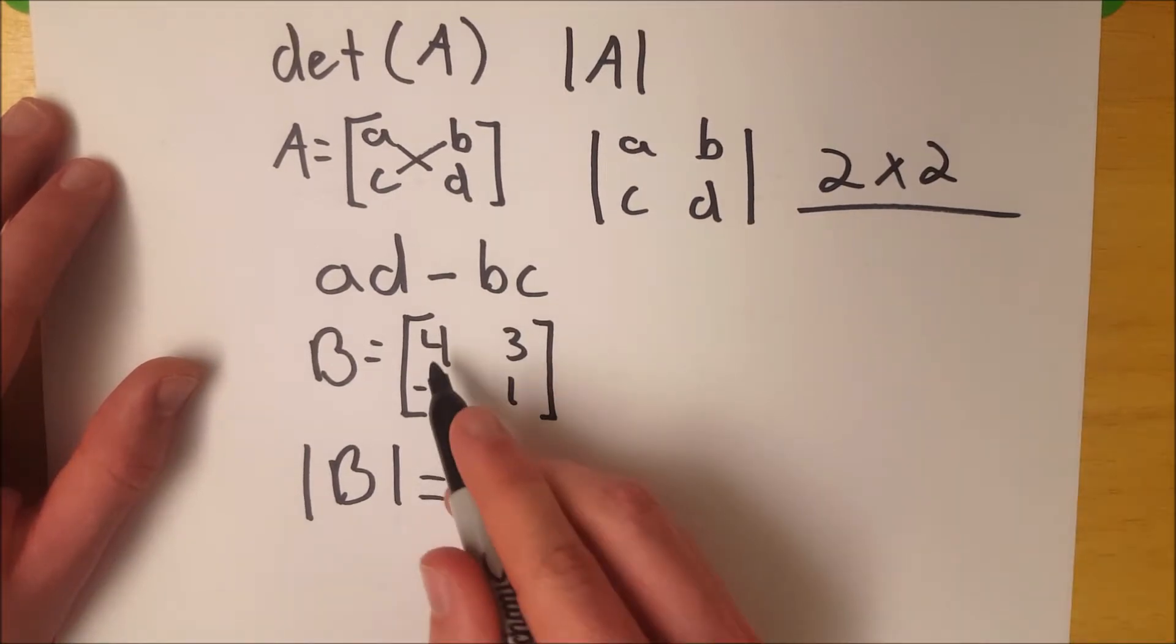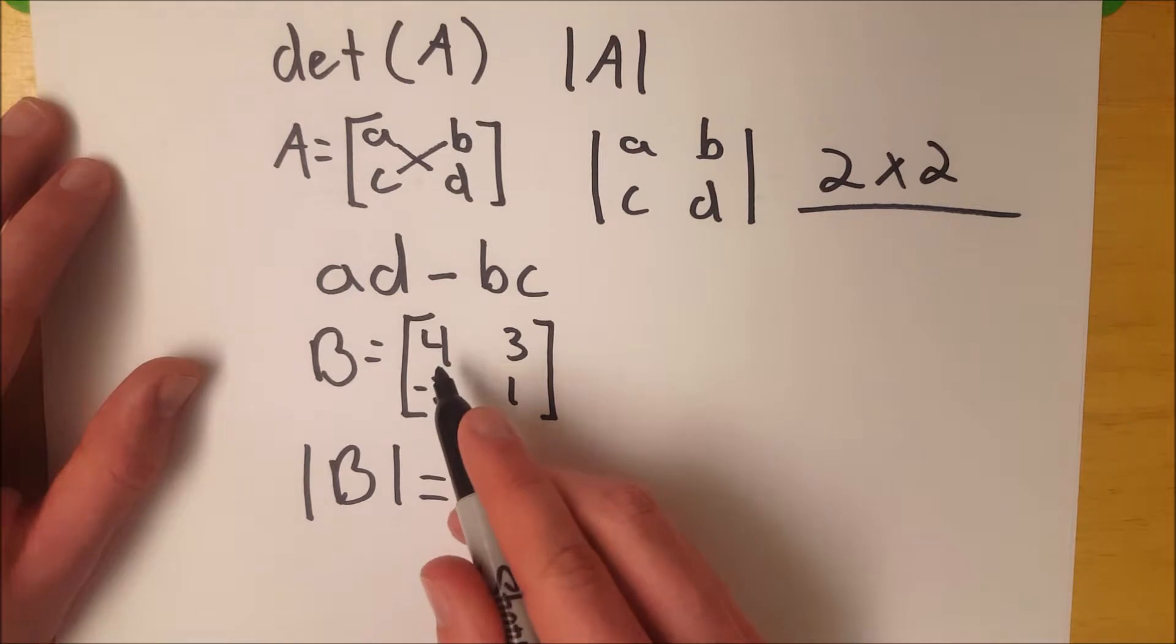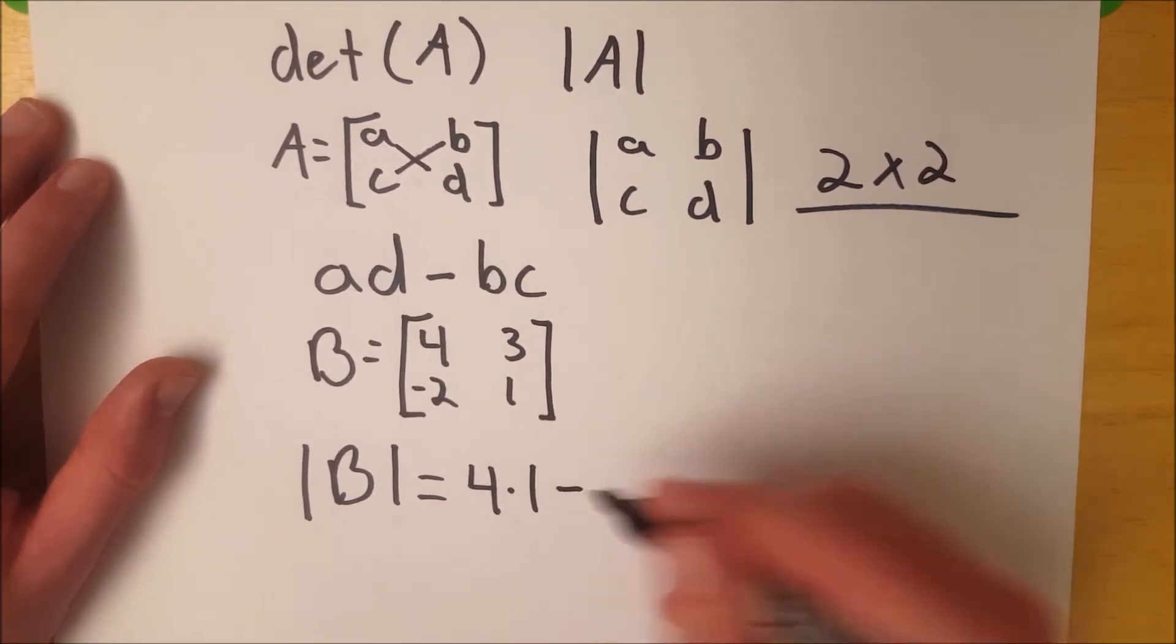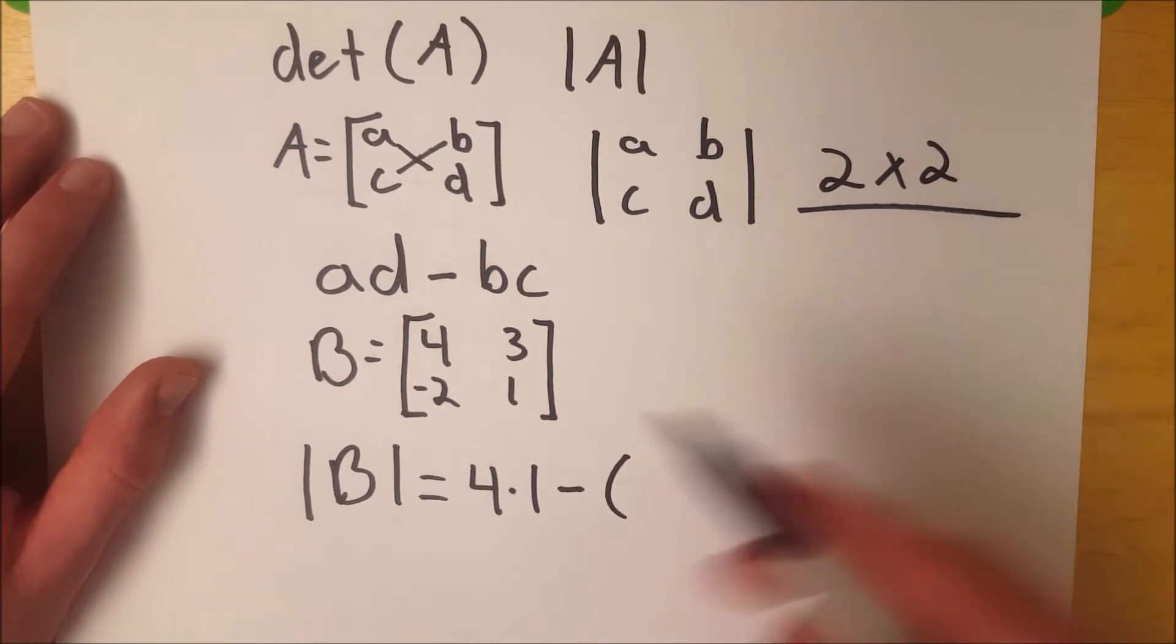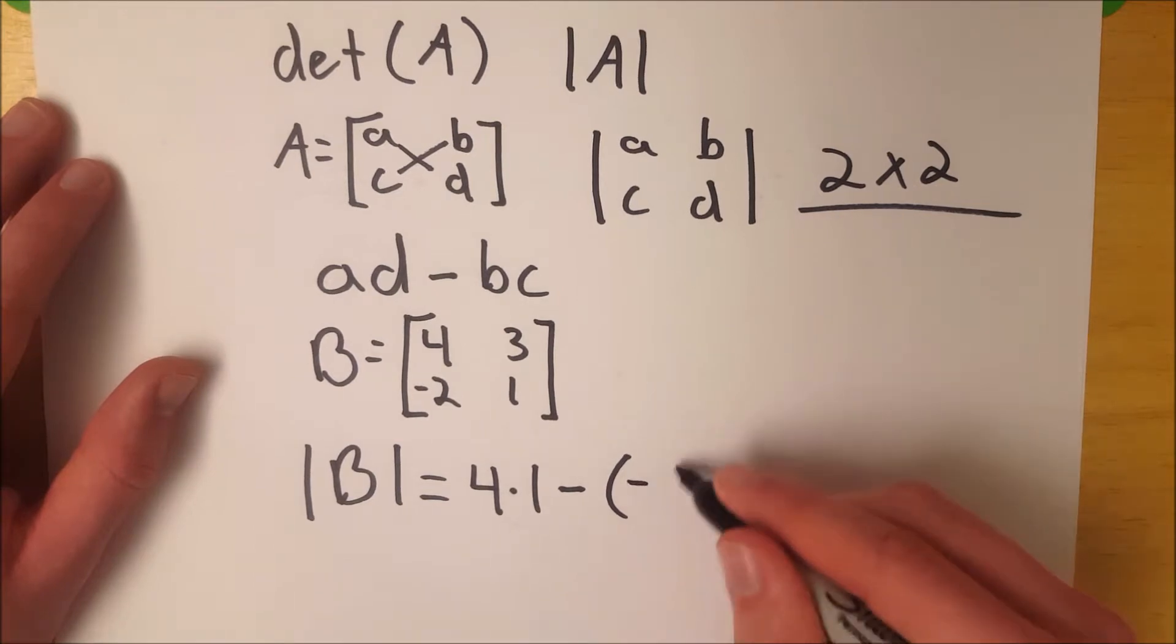Well, we do 4 times 1, the product of the diagonals, starting at the first row, first column entry. So that's 4 times 1, and from it, subtract the product of the other diagonal entries. So that's negative 2 times 3, which is negative 6.